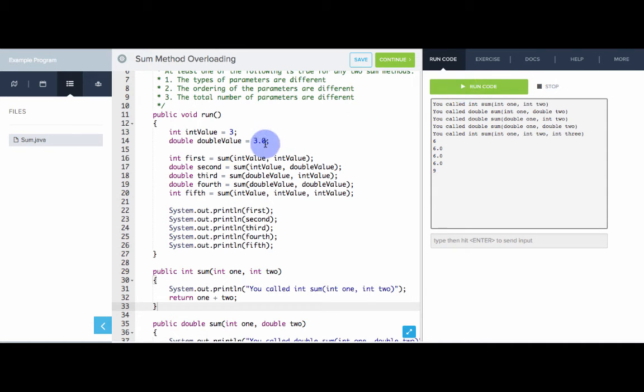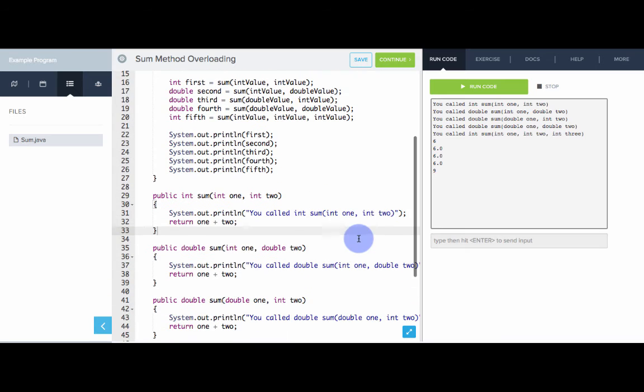Awesome, it worked. So, we see that in the first call, calling sum with and passing two int values, called the correct one, int sum int one int two. Calling sum with an int followed by a double, called this one right here, sum of int double. Calling it with a double followed by an int, called the correct one, sum double int. Double double, called sum that takes two doubles. And three ints, called the sum that takes three ints. Awesome.